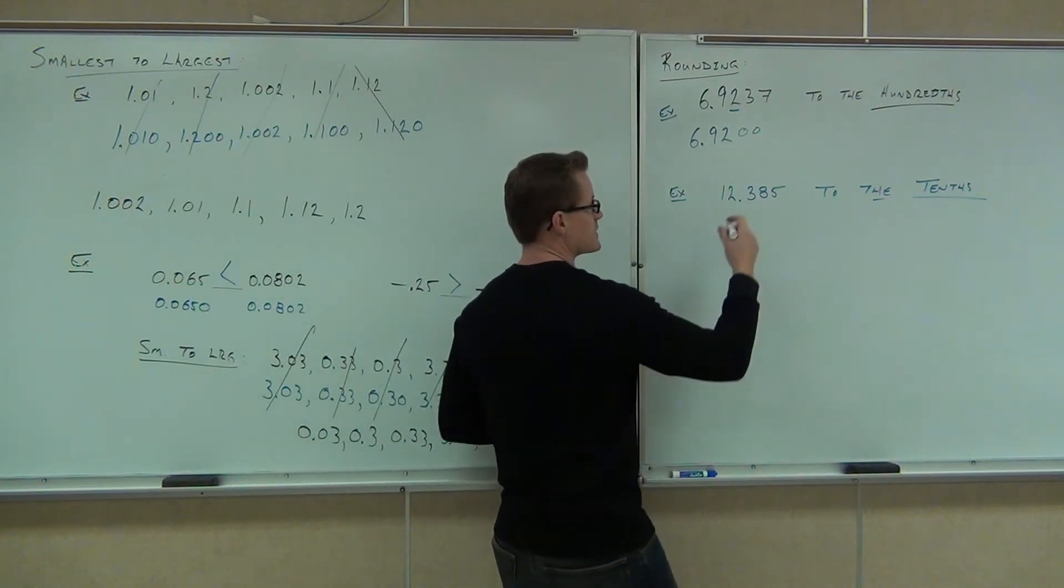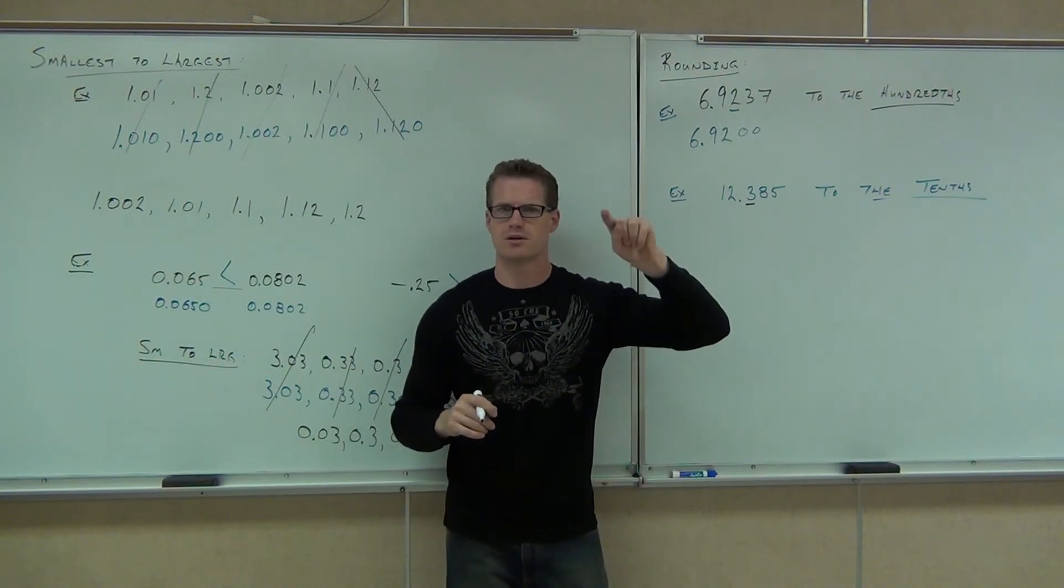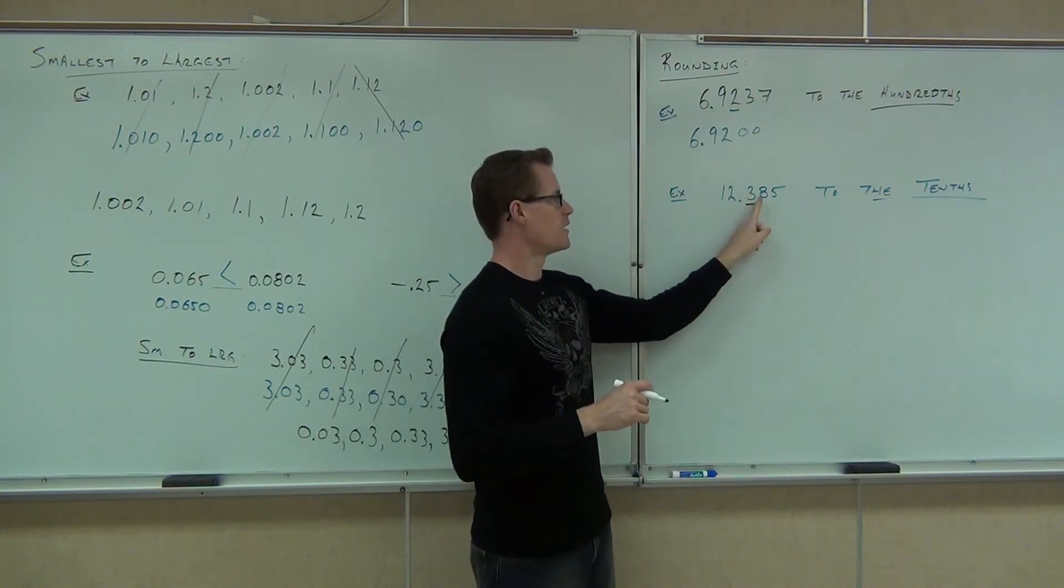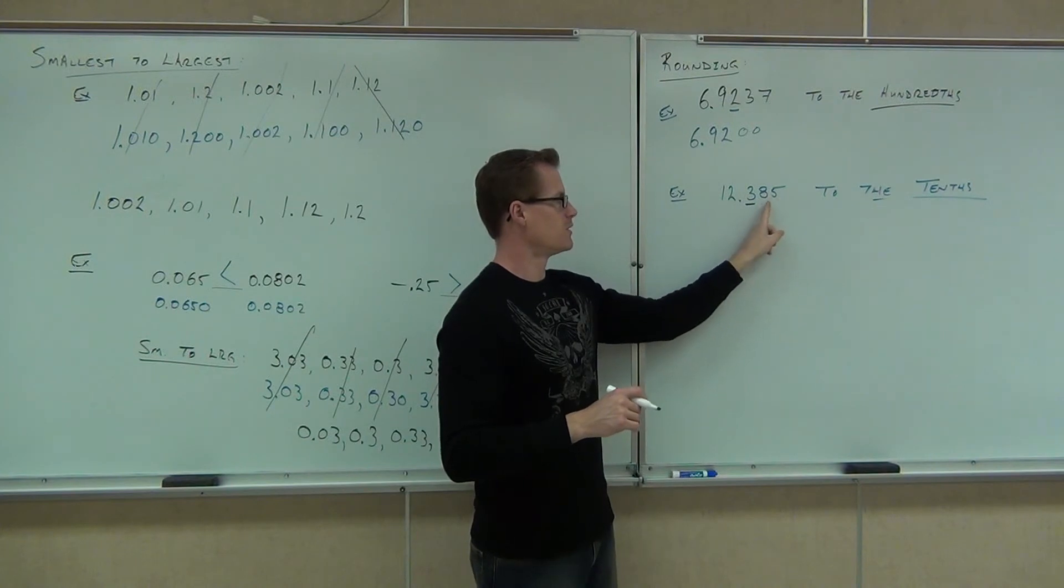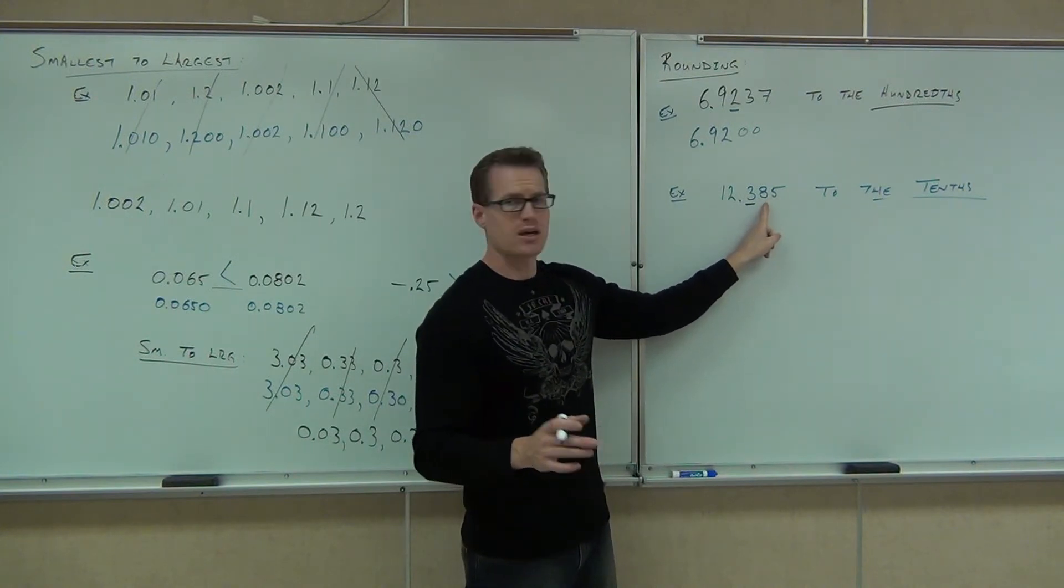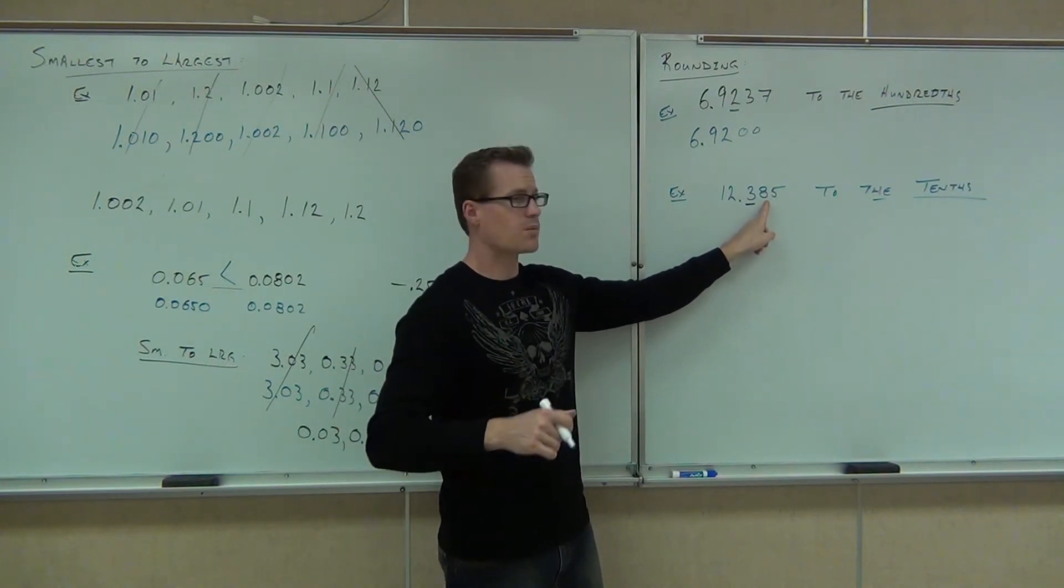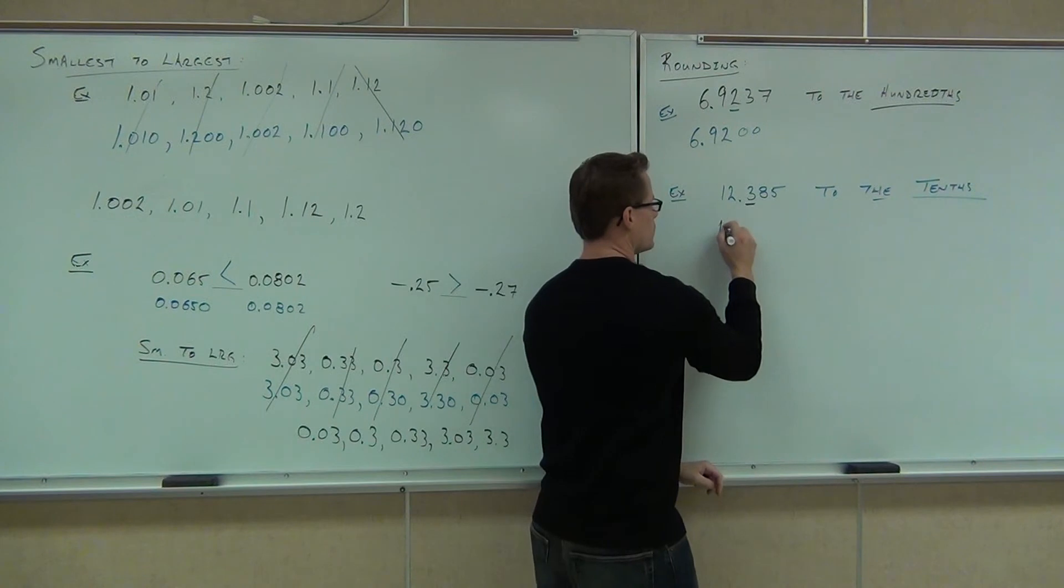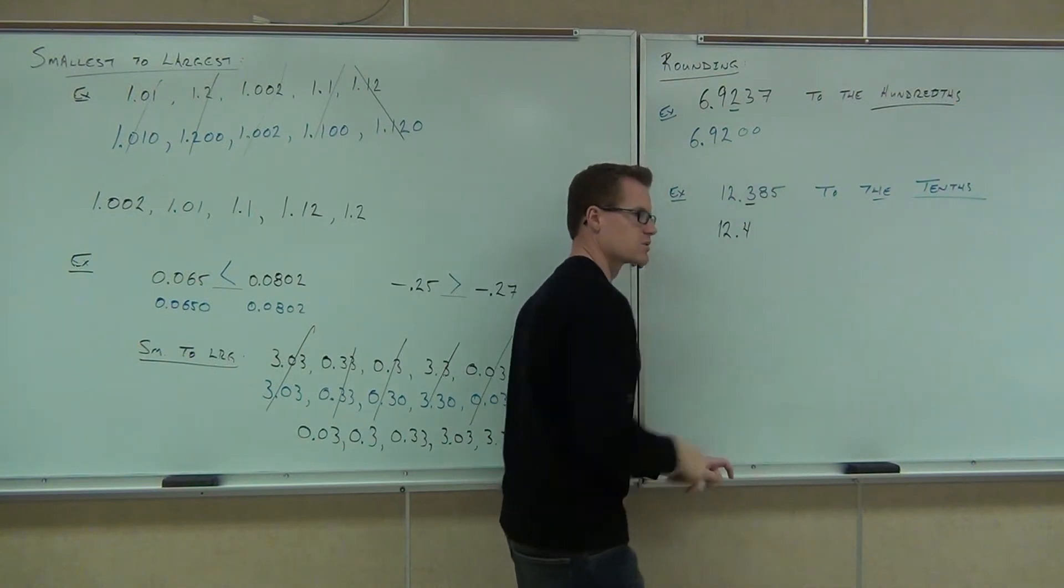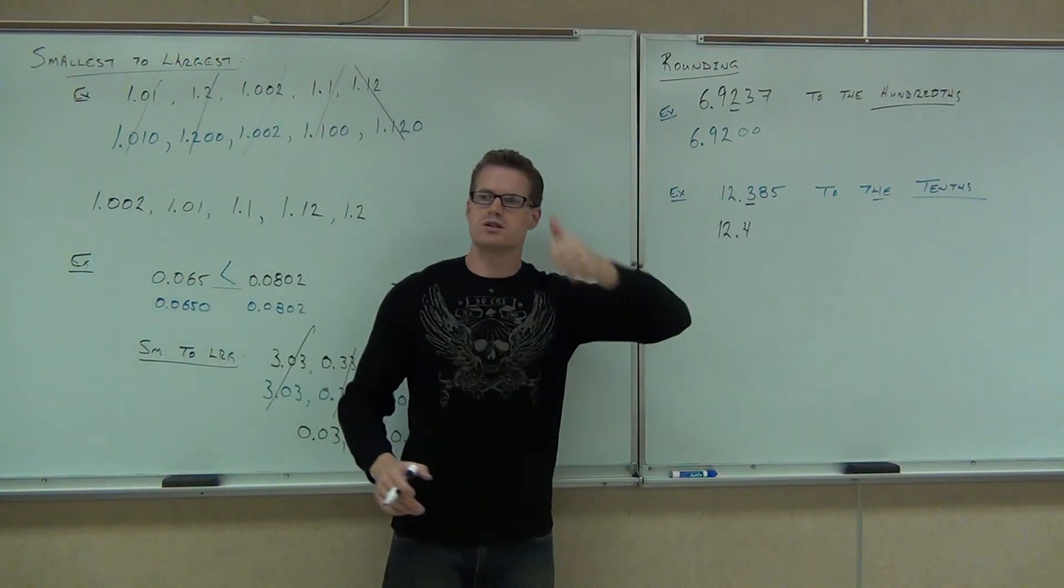So I'm going to identify the tenths. Do I look at the digit to the right or the digit to the left? The digit to the right. So I'm looking at the eight or the eight five? Just the eight. The five doesn't even matter. We're just looking at that digit. Am I going to move the three up or leave the three alone? Move it up. That's five or more. I get 12.4. And you can put a zero or just leave it at 12.4. This eight rounded that three up one unit.